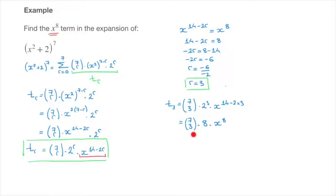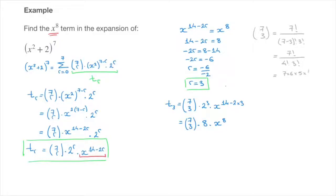All we need to do now is calculate this binomial coefficient, and I'll do that on the right-hand side. The binomial coefficient 7 choose 3 equals factorial 7 over factorial (7 minus 3) times factorial 3, that's factorial 7 over factorial 4 times factorial 3.